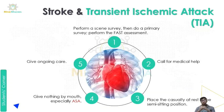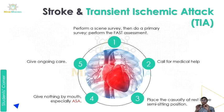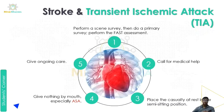The fourth point is give nothing by mouth, especially ASA. Fifth, give ongoing care — keep attending to the person until medical support arrives. These are the five steps for managing TIA or stroke.